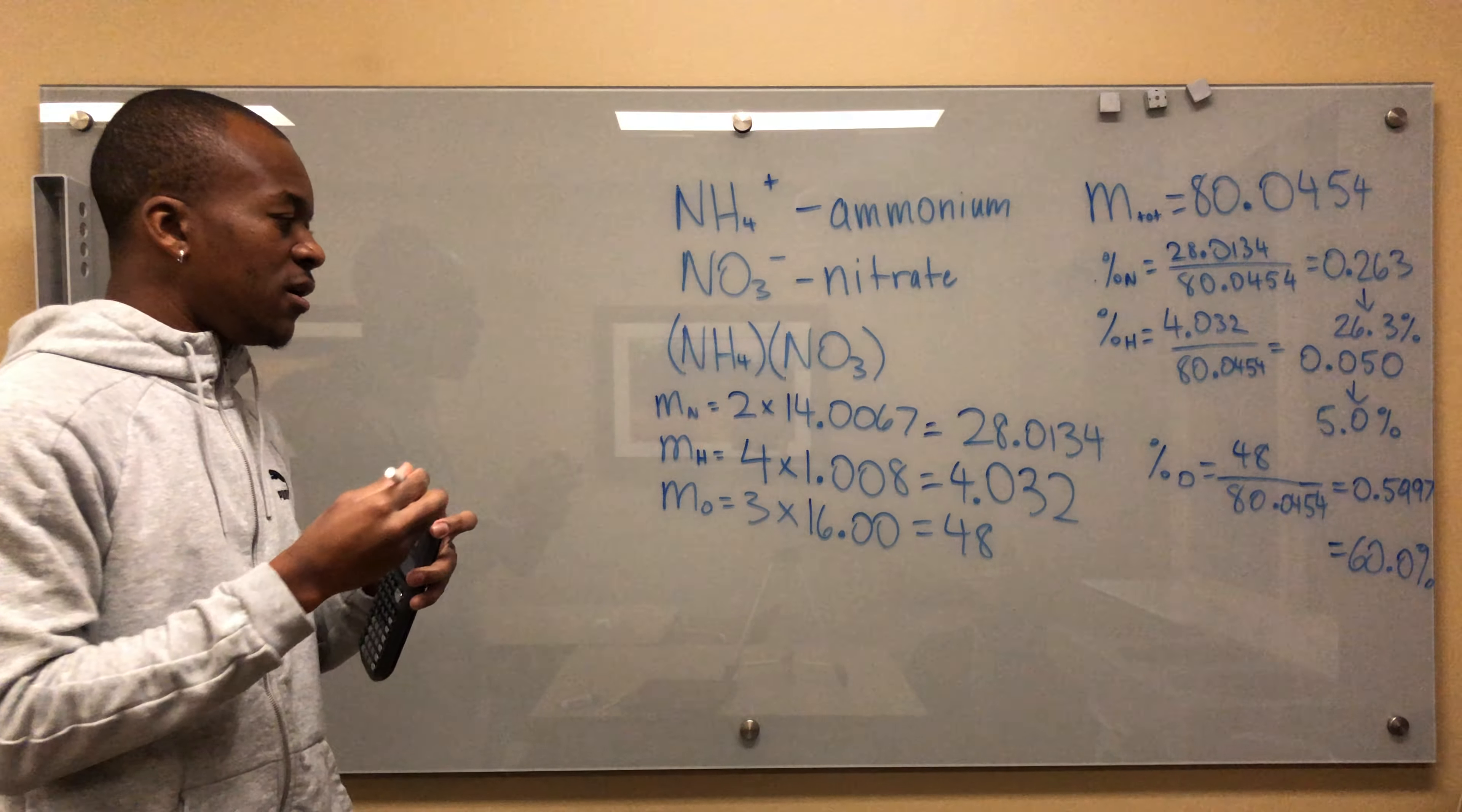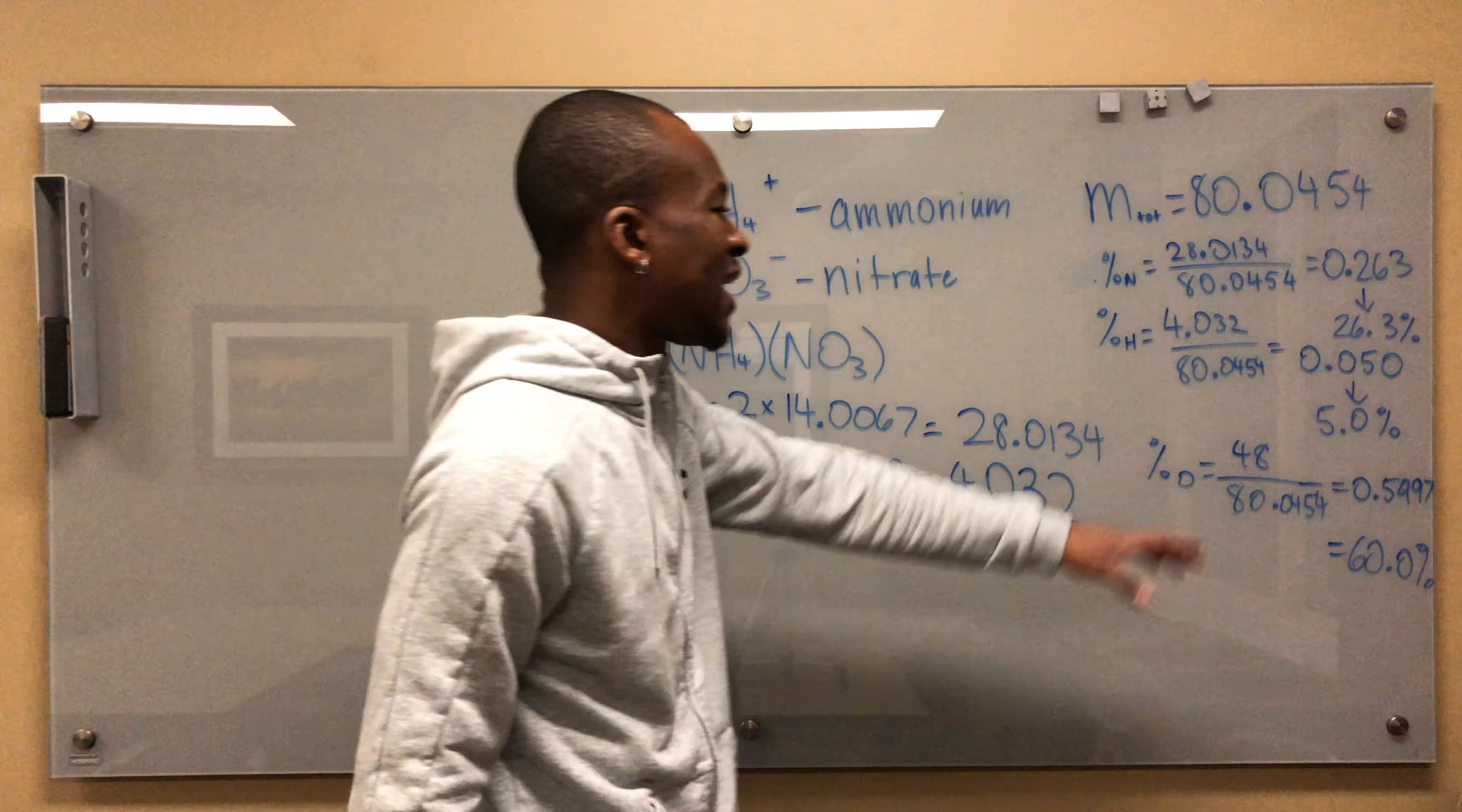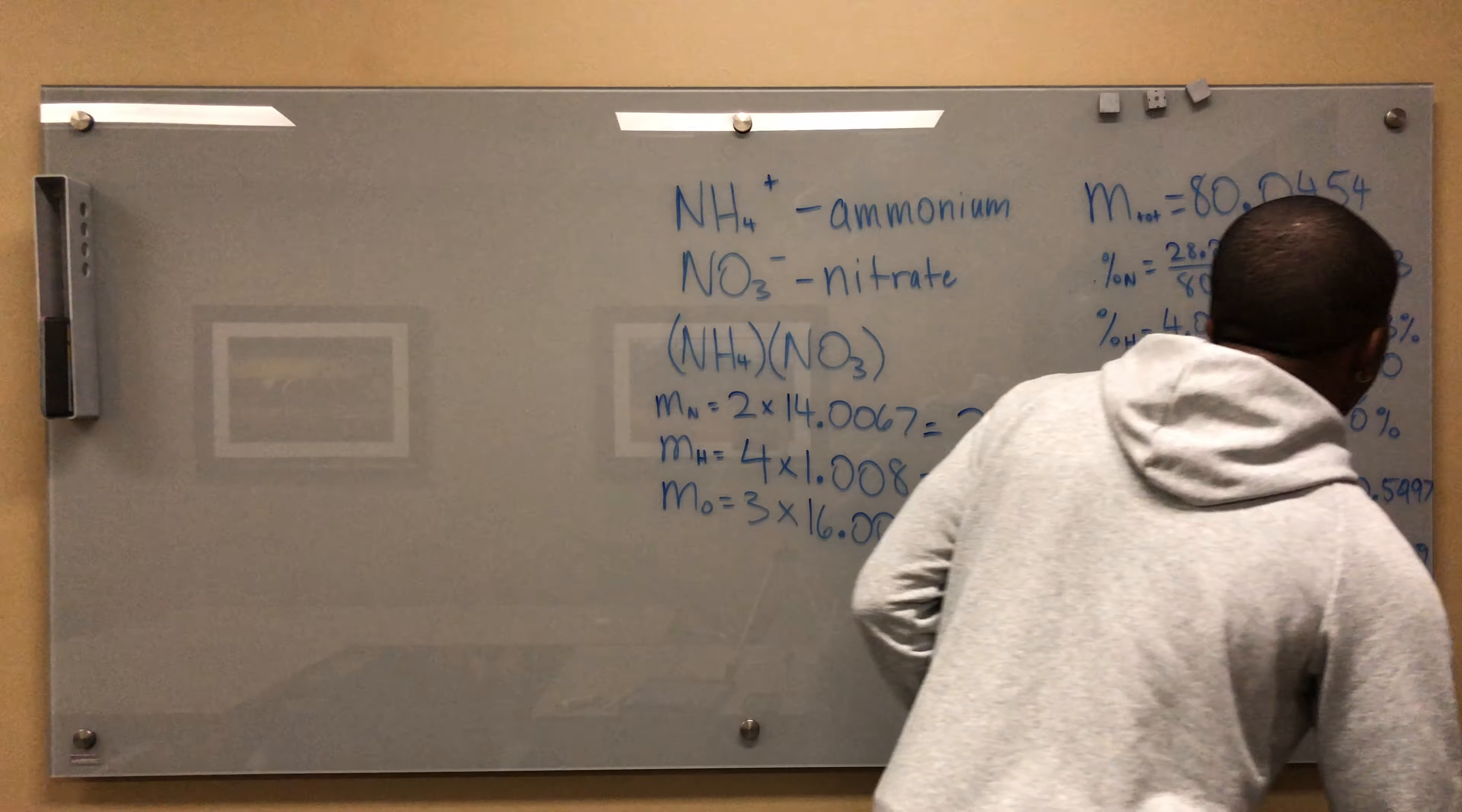So I can say 26.3 percent in terms of mass percentage - 26.3 percent of the mass of this whole thing comes from nitrogen. Remember I said this was going to be the most, this second, this third - that's what we got. 5 percent is hydrogen and 60 percent is oxygen. Wait, this number doesn't add up to exactly 100. It should add up to 100, shouldn't it? Let me double-check myself. Oh no, I made a mistake - that right there is incorrect.